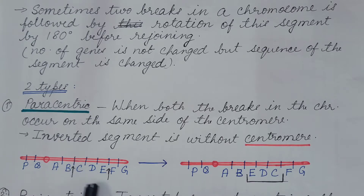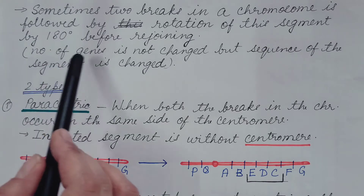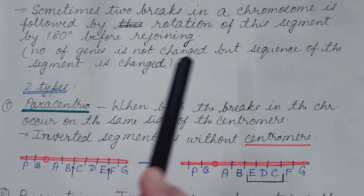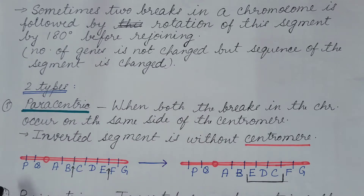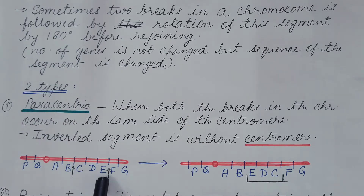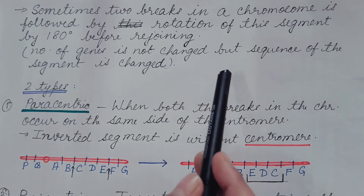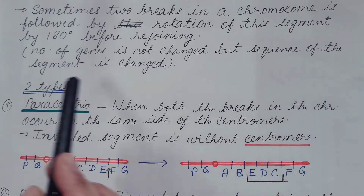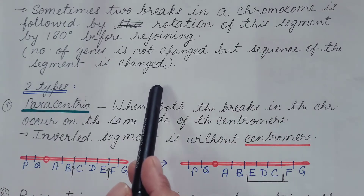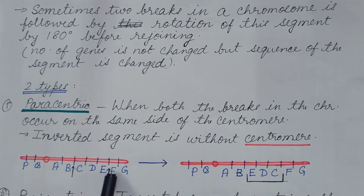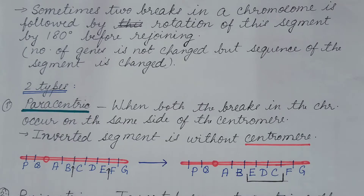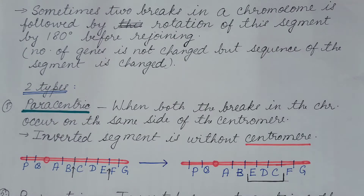Here there is no change in the number of genes — it is 3 in both cases. But the sequence of the segment is changed; the sequence of the segment is inverted. This is known as inversion.